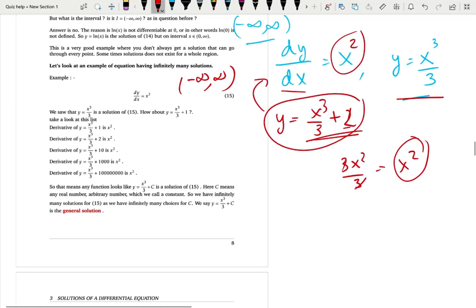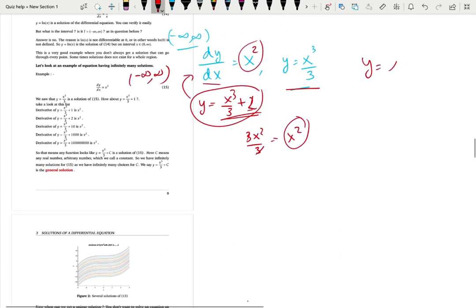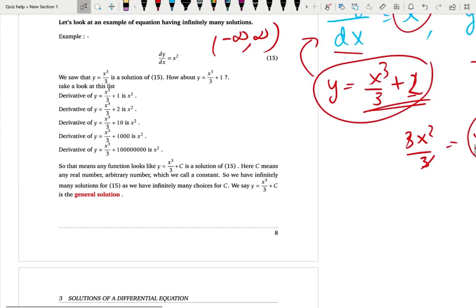So that means really for this differential equation, y is equal to x cube over 3 plus any constant. So let's represent that as capital C. Any arbitrary constant is a solution for the equation, right? So that means how many solutions you have, infinitely many solutions because you can choose any number for C, but still it turns out to be the correct solution for the differential equations.